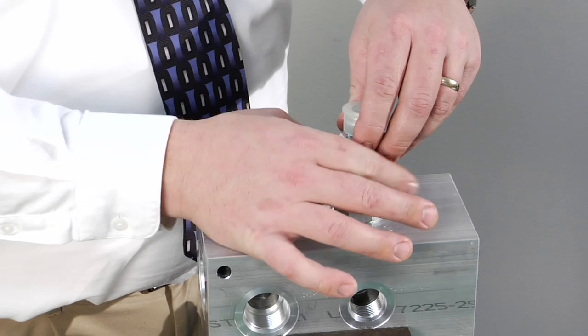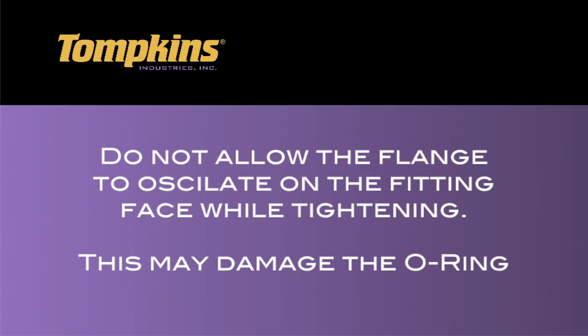Place flange against fitting face and tighten nut. Do not allow the flange to oscillate on the fitting face while tightening. Oscillation of flange against fitting face may damage or dislodge the O-ring.